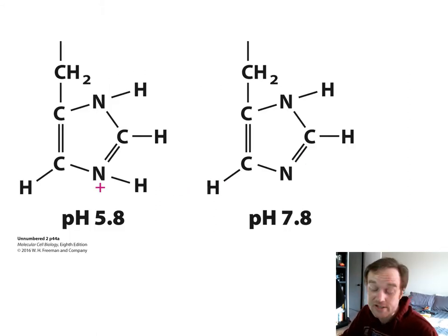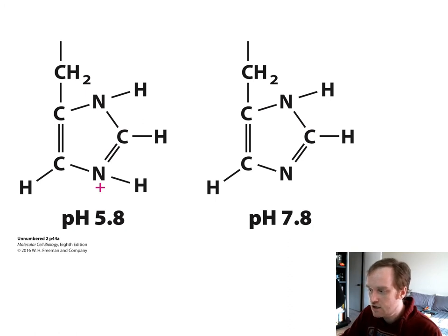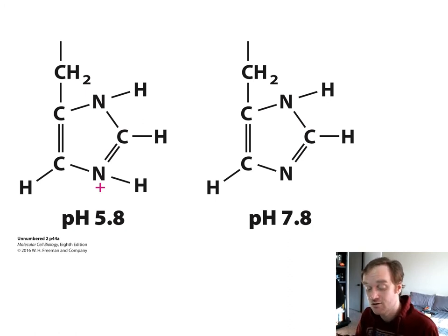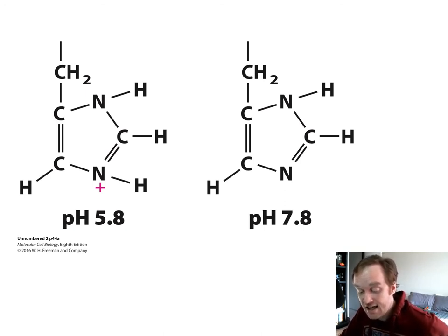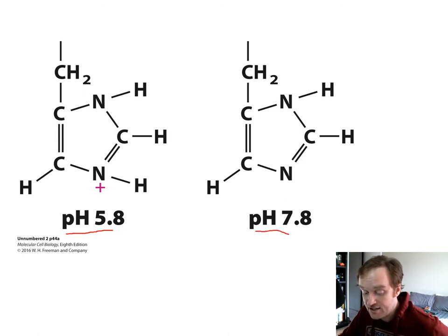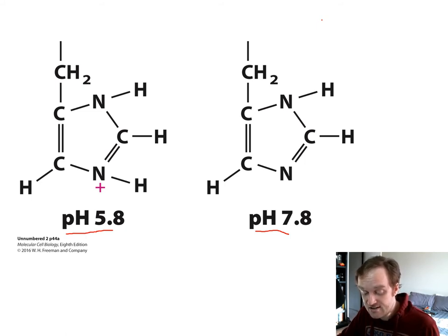Amino acids are very responsive to changes in pH. In lab work, chemical reactions with proteins are very pH sensitive. You have to ensure the pH is within the active zone. Here we have histidine — if you shift the pH from 5.8 to 7.8, a shift of 2 pH units, there is a shift in the protonation or deprotonation of the histidine side chains. It becomes deprotonated if the pH is too high compared to its active pH of 5.8.